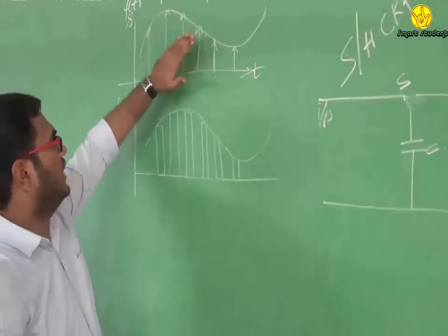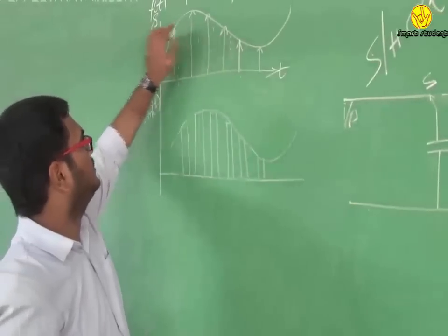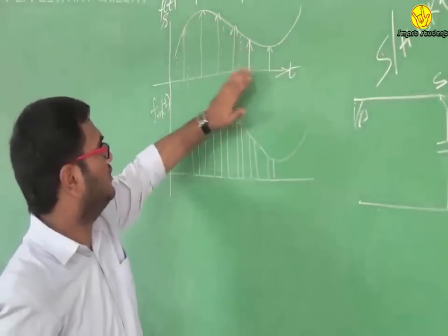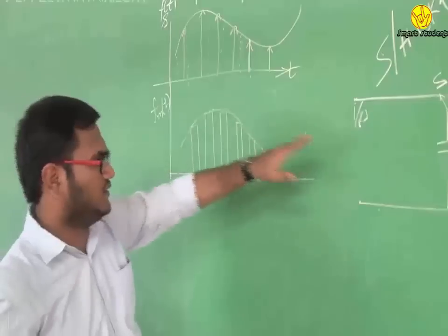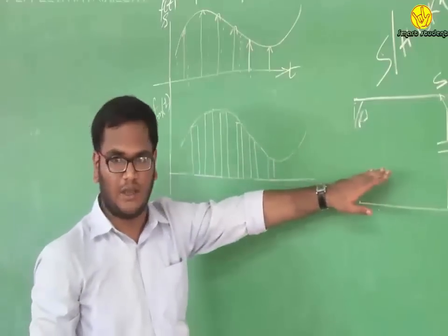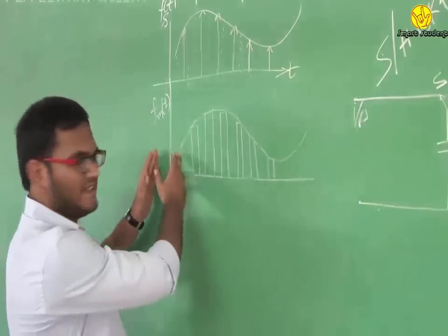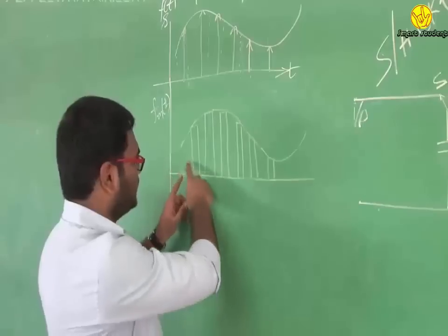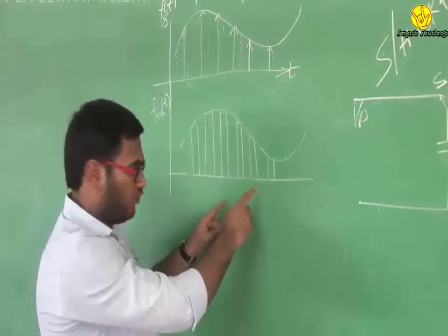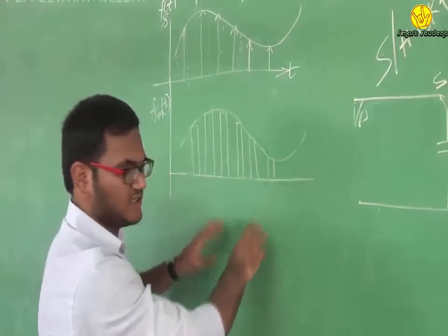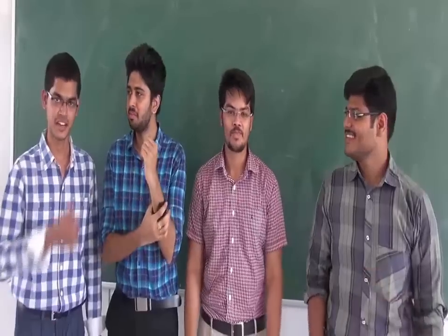The graphical representation of flat top sampling is as follows. The impulse sampled baseband signal fs(t) is given to the circuit, and the modulated output signal is shown. This is the flat top sampling result.